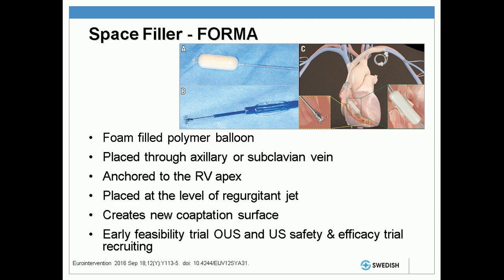The next device is the FORMA device from Edwards. It's a foam-filled polymer balloon that essentially provides an additional coaptation surface for the native tricuspid valve leaflets to close against. This device is placed through the axillary or subclavian vein, with a small subclavicular pocket placed much like a pacemaker. There's an anchor at the end that allows it to be anchored to the right ventricular apex, and the device is optimally placed at the level of the regurgitant jet, providing a new coaptation surface. Early feasibility trials outside the U.S. as well as U.S. safety and efficacy trials are currently recruiting.